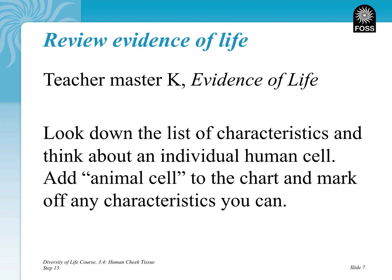Now you can add animal cells to your evidence of life sheet and check off any characteristics that you think you might have seen with regard to your human cheek cells. Go through each of those, look at them, and hypothesize based on what we've talked about. Add animal cells — your individual human cells — to that list. As we move forward, we can compare us with paramecium and elodea cells as well.